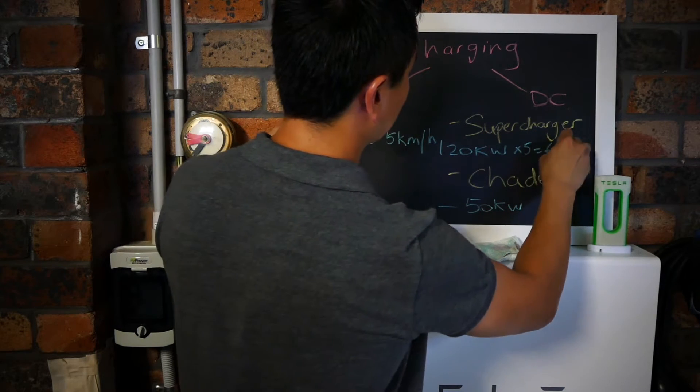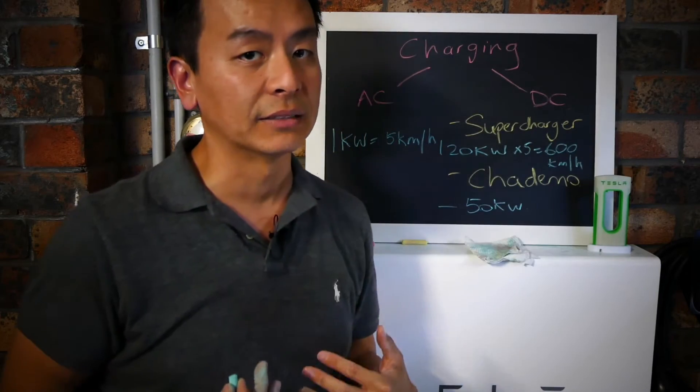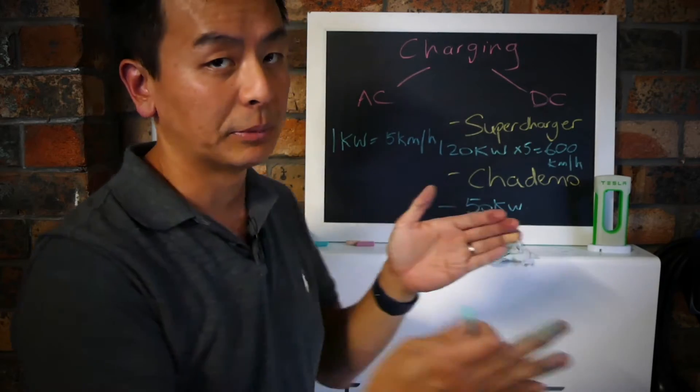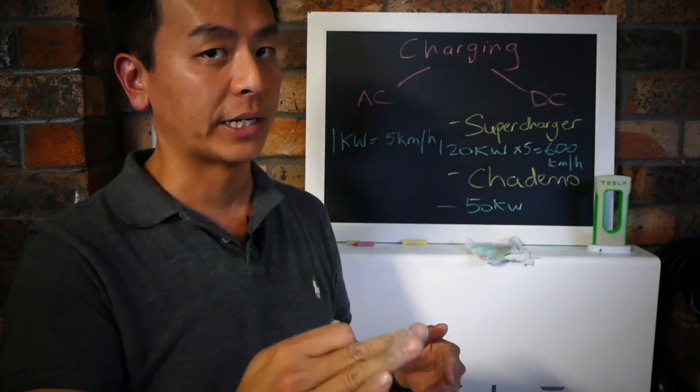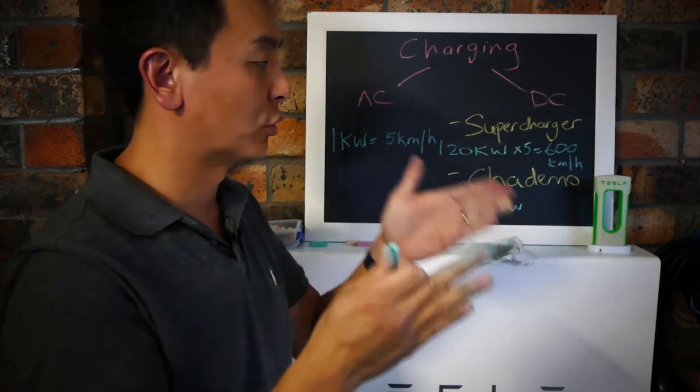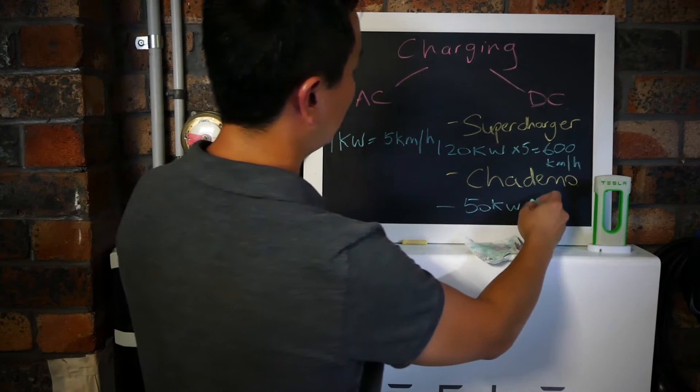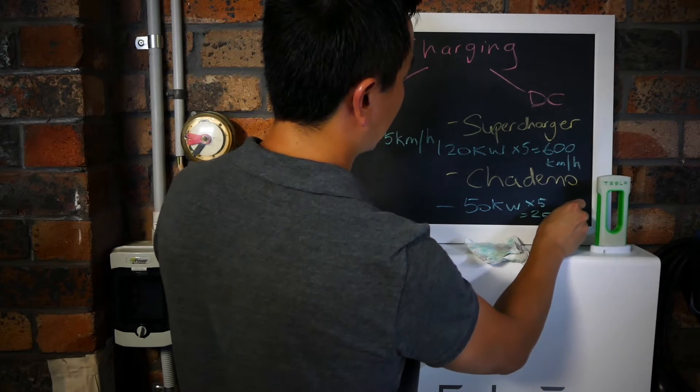With 120 kilowatts, multiply that by five, you get 600 kilometers an hour. I personally have never seen it charge that quick - it's normally more like 300 to 400 if you're lucky. Keep it between 20% and 80%. If you charge beyond 80%, it slows down dramatically.